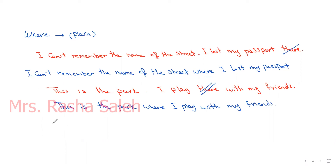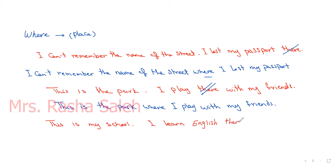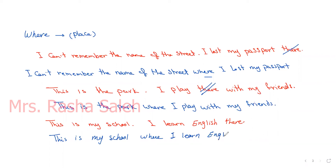Another example: 'This is my school.' and 'I learn English there.' Using 'where', the result is: 'This is my school where I learn English.' We also remove 'there'.